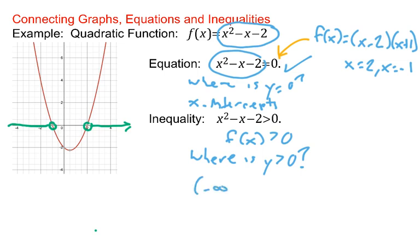Negative infinity to negative 1, union 2 to infinity. Notice there's no sign chart, there's no anything else. I'm simply looking at the graph and asking where is it above the axis.